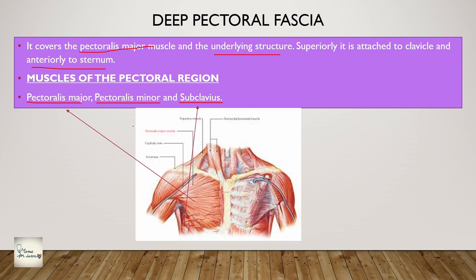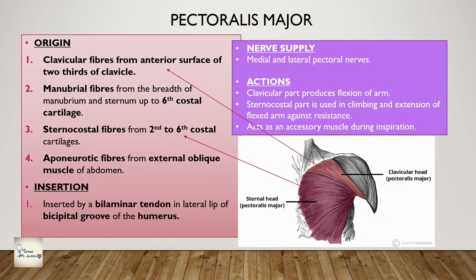When learning about muscles, you need to know at least the basic information about origin and insertion, because in viva when you are asked about specific points - especially about the humerus bone and the clavicle, which are the most frequently asked - you need this. Coming to pectoralis major, the origin has four different sides but one common insertion. The clavicular fibers arise from the anterior surface of the medial two-thirds of the clavicle.